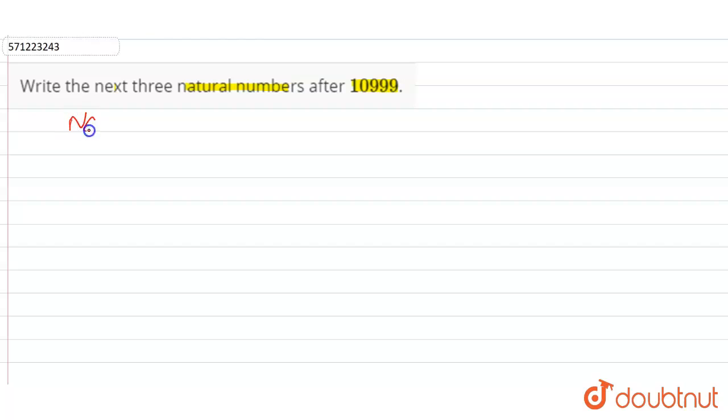Firstly, let's understand what natural numbers are. So natural numbers are all the positive integers we can say, starting from 1 to infinity. All the numbers between 1 and infinity are the natural numbers.